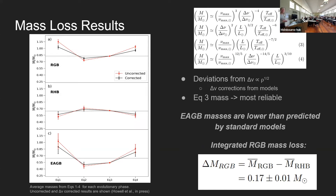Moving on to the mass loss results. Once I found nu_max, delta_nu, temperature, and luminosity for all my stars, I computed individual masses and then took the average from those four equations for each evolutionary phase, summarized in the left plot. What is commonly done in asteroseismology is to apply delta_nu corrections, because we know there are deviations from the delta_nu scaling relation. Delta_nu corrections are computed from models and implemented into the mass relations. The red points on the left plot are my uncorrected masses and the black points are the corrected masses. Note that the delta_nu corrections only apply to relations that depend on delta_nu — equation three is independent, so no corrections are applied there.